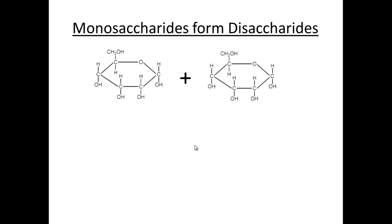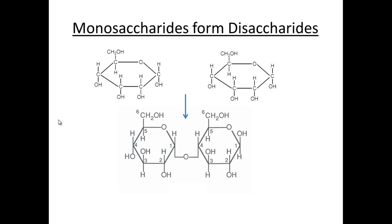A monosaccharide like glucose can go on to form a disaccharide, where two monosaccharides join together. Here we're showing two glucose molecules joining to form a molecule called maltose. What happens is a condensation reaction — water is produced, and the two glucoses are then bound via an oxygen. We refer to that as a condensation reaction because water is lost.